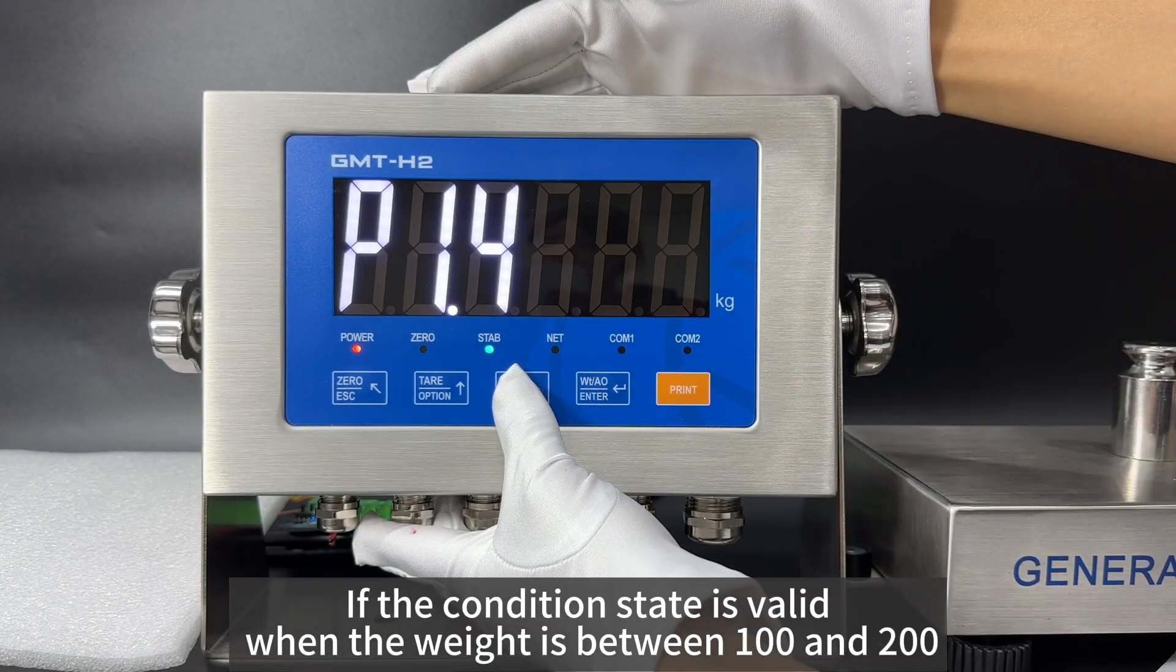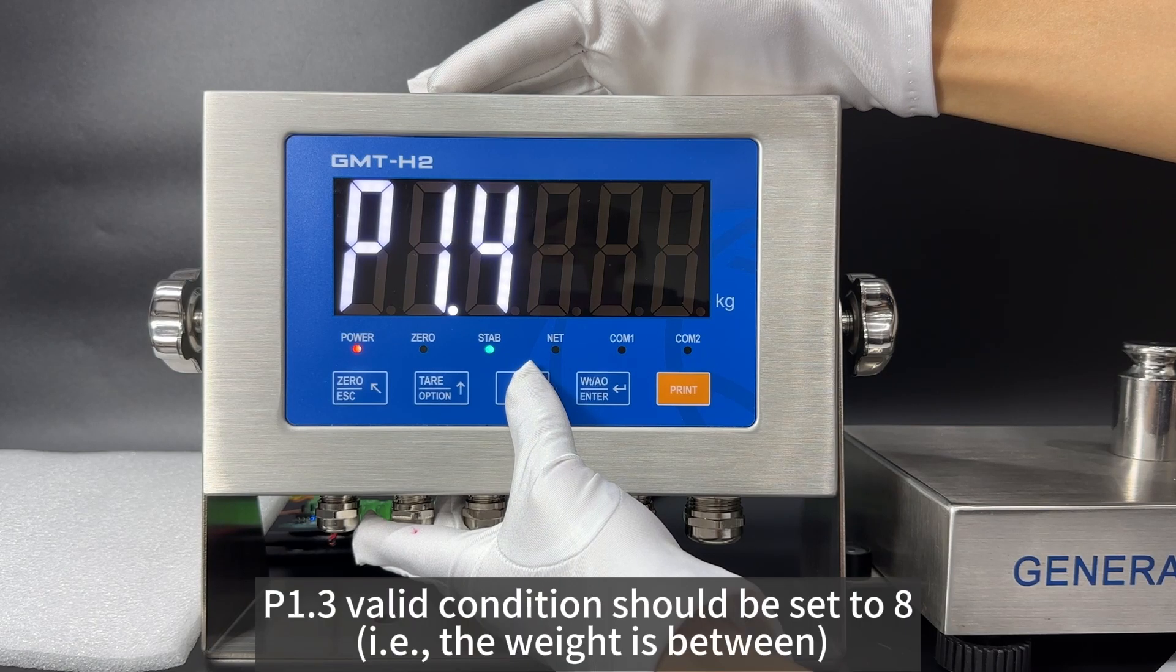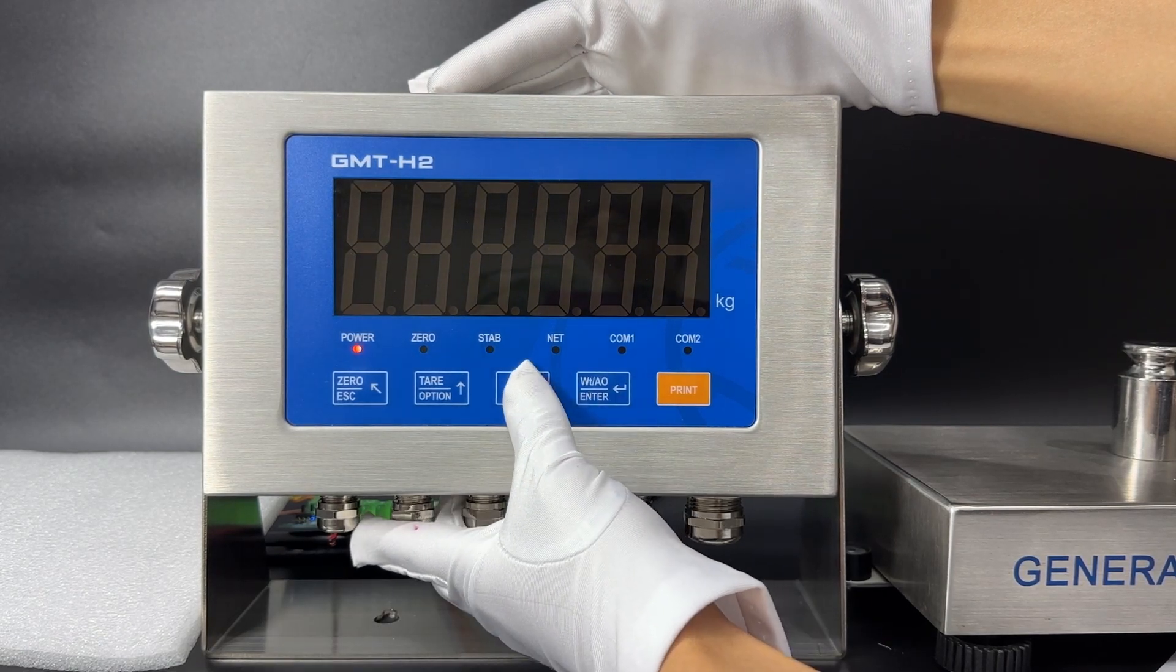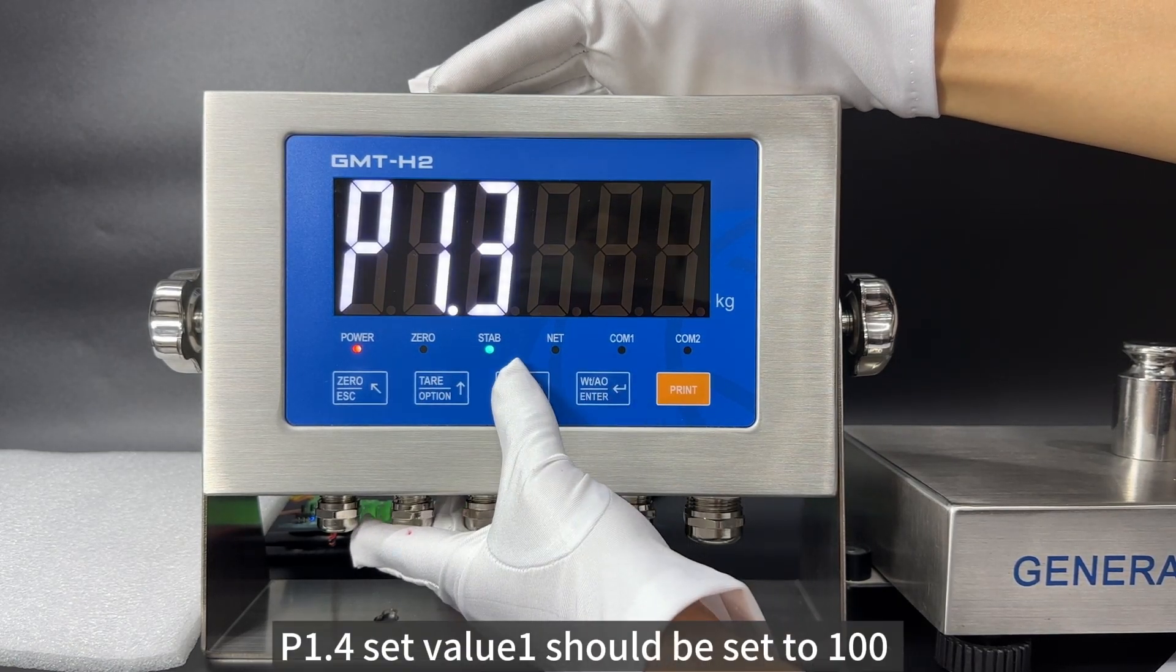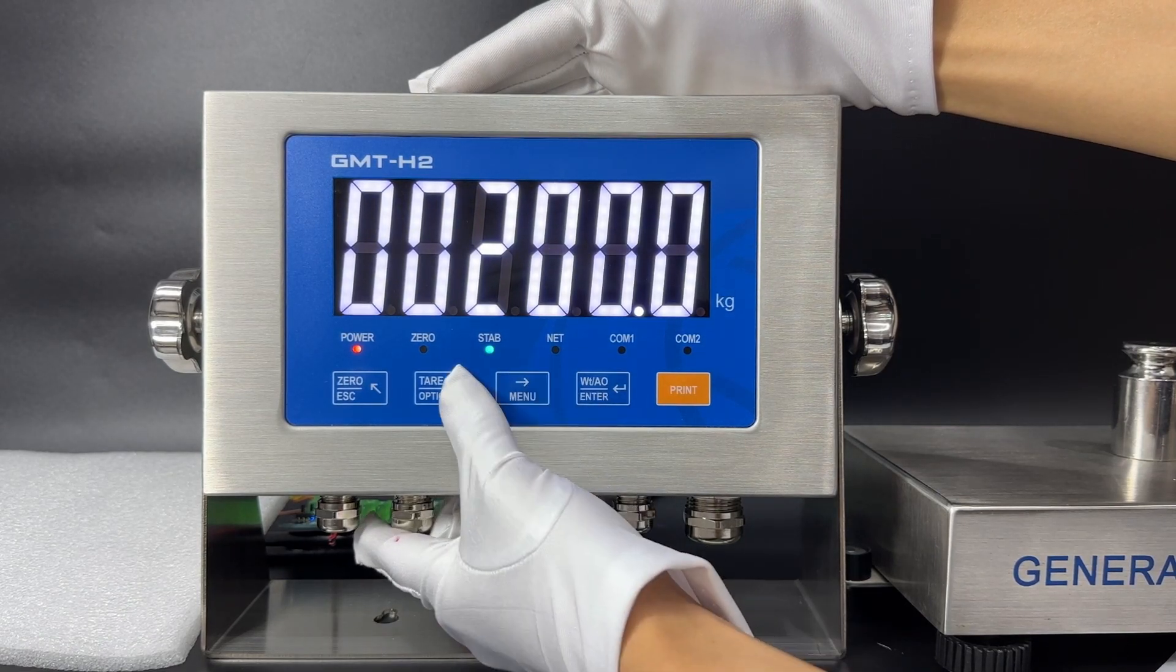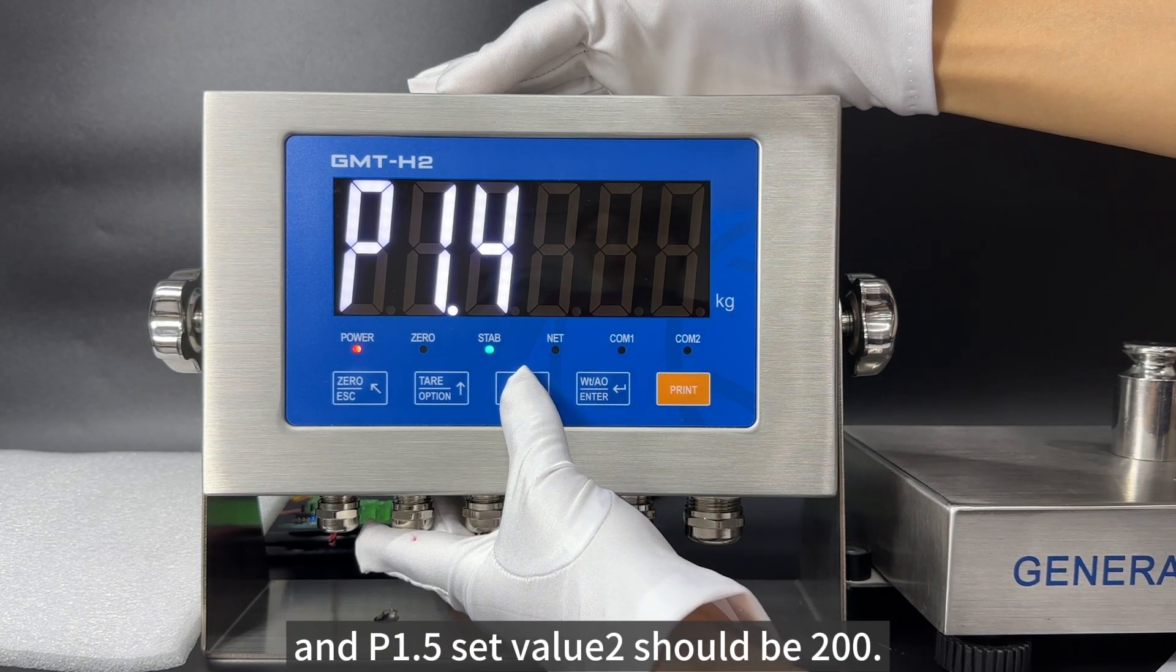If the condition state is valid when the weight is between 100 and 200, P1.3 valid condition should be set to 8, P1.4 set value 1 should be set to 100, and P1.5 set value 2 should be 200.